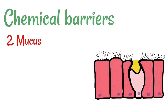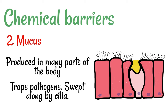Another chemical barrier is mucus. Mucus is produced in a lot of parts of the body by these things called goblet cells, and you can see it being produced there in yellow. It's produced in, for example, the trachea, as it's produced by the lining inside of the goblet cells. It traps pathogens inside of it, and then the mucus gets swept along by these little hair-like things called cilia.